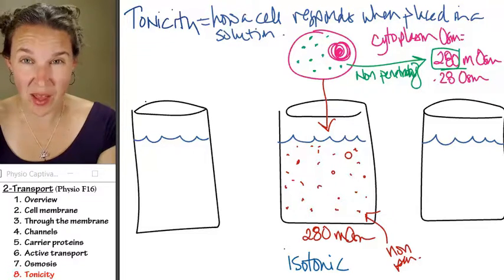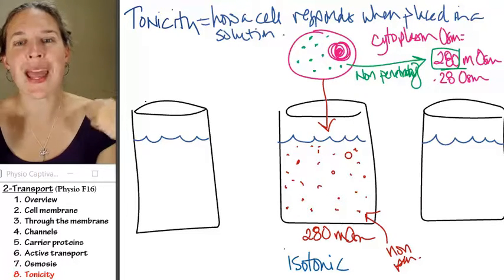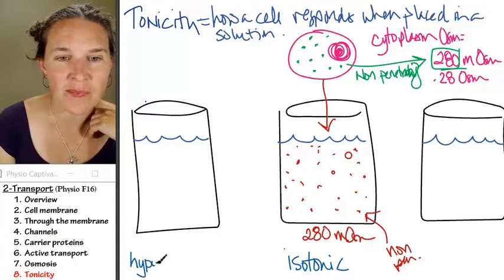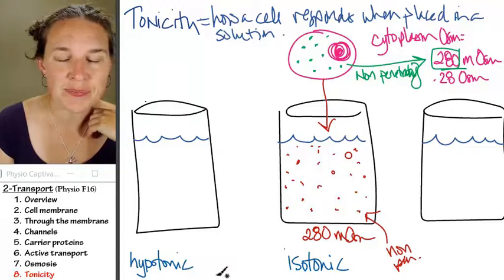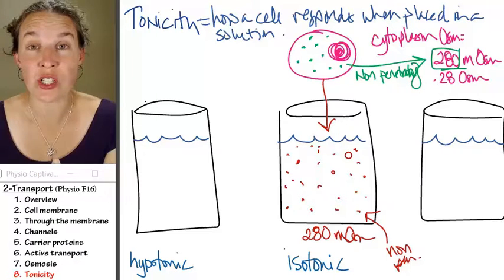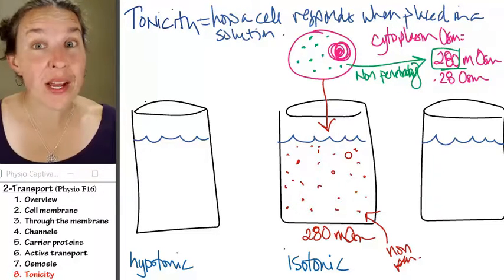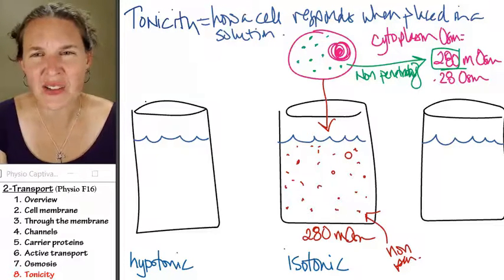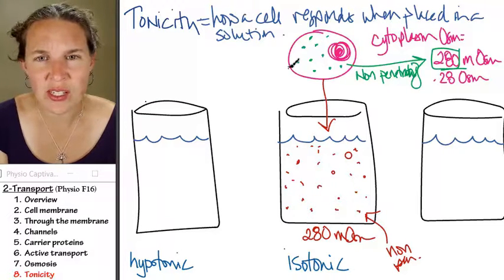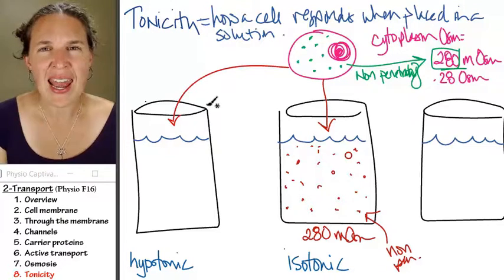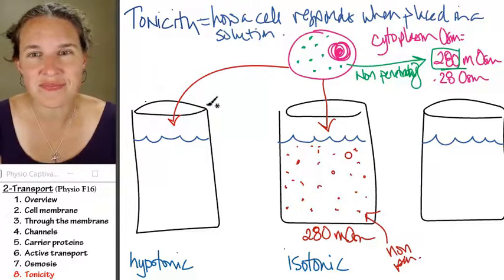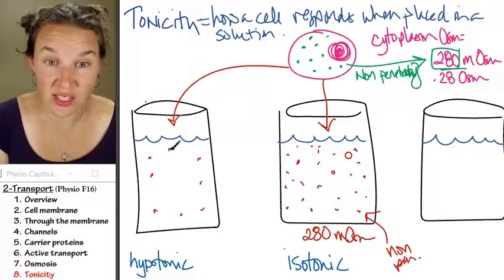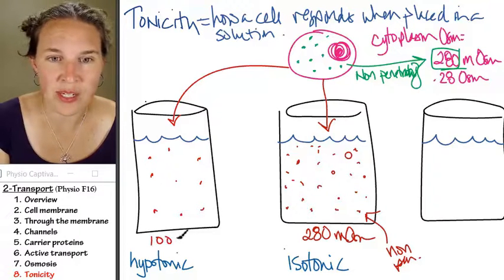Sometimes your cells swell. If they get put into a hypotonic solution, they're going to swell. A hypotonic solution is any solution, I don't care what it is, any solution that is going to cause that cell to swell. So give me a scenario, what kind of solution could I drop this cell into and have water go into the cell? How about a solution with a concentration of maybe 100 milliosmoles?